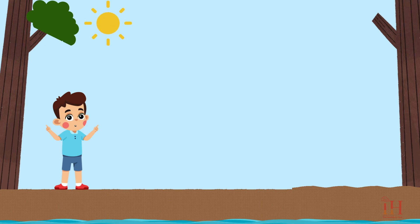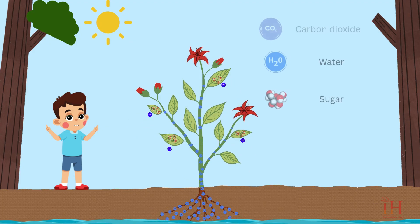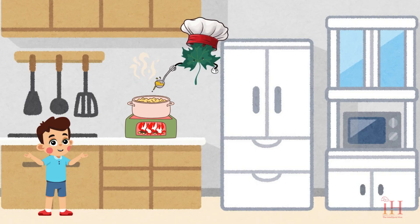Plants are amazing because they don't eat like we do. Instead, they make their own food using sunlight, water, and carbon dioxide in air. This magic trick is called photosynthesis. They use their green leaves like little kitchens to cook food from sunlight.